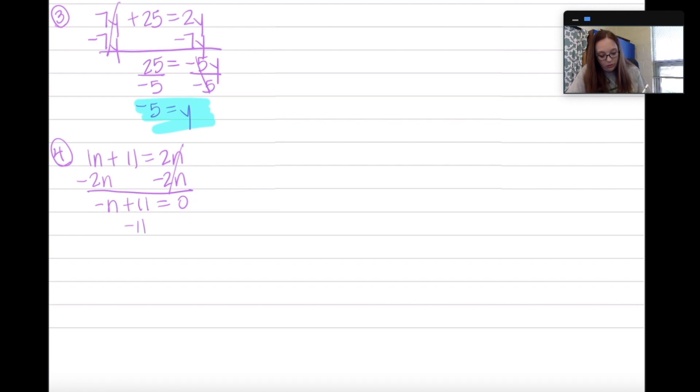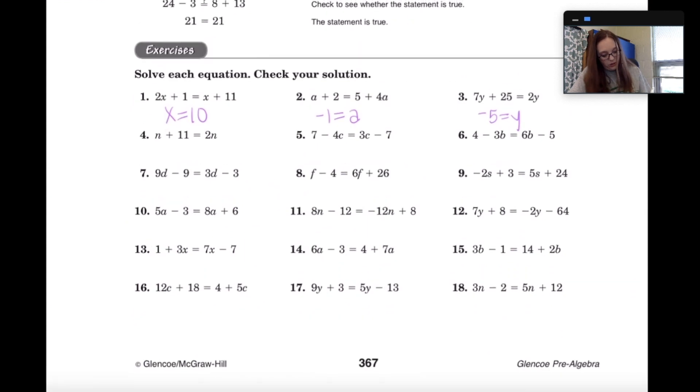Now we're going to subtract 11. From here on, you should know what to do. So negative N equals negative 11. Divide both sides by negative 1. N equals positive 11. Let's write that answer down on our worksheet. N equals 11. And we'll do number 5.